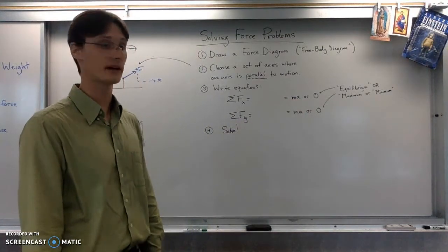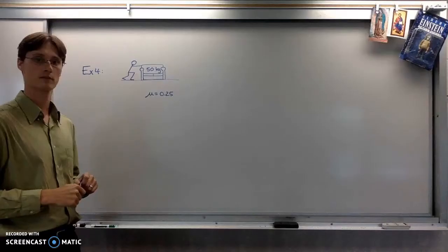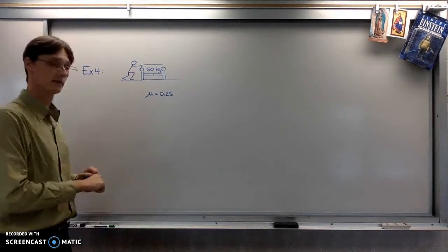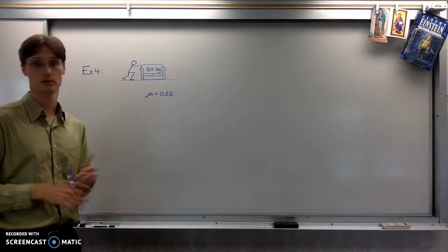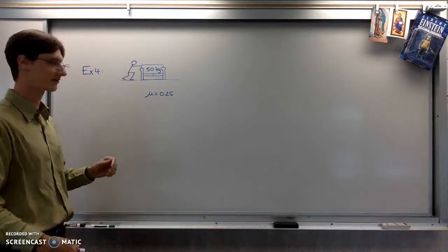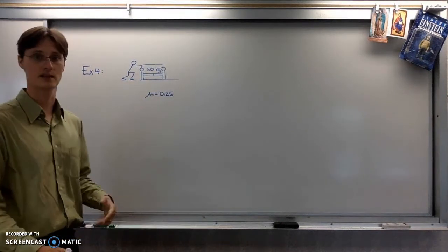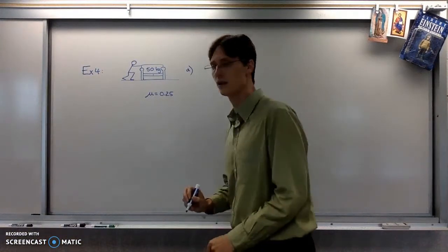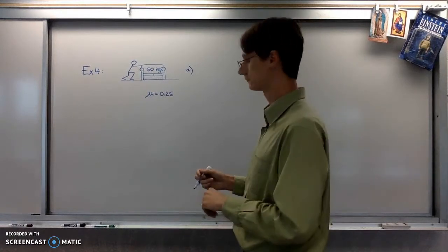So we should probably look at some specific examples now so that we can actually solve the problem. So if you could find in your notes packet now, example four, this is a situation being described. Somebody is trying to push a couch across a level surface. It says the coefficient of static friction is 0.25, and it's a 50 kilogram couch. Part A wants to know the minimum force required to start it moving.